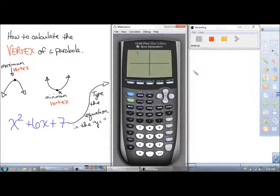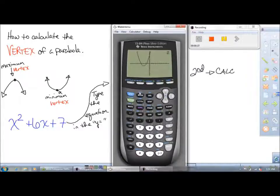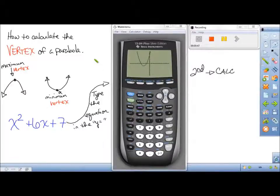In this example we are going to have a minimum vertex, and to calculate this you're simply going to hit the second button and hit calc. Since we have a minimum, we are going to tell the calculator to calculate that minimum point on the parabola here. So we're looking at the minimum.